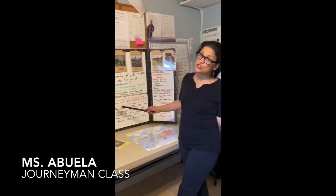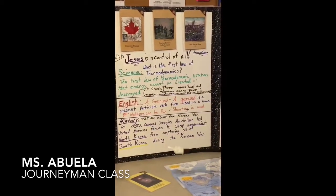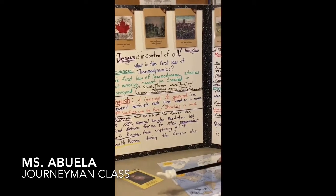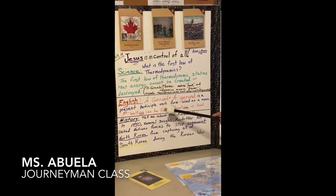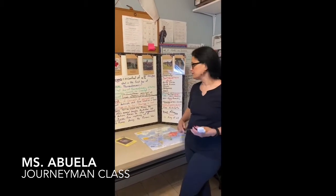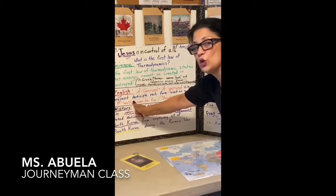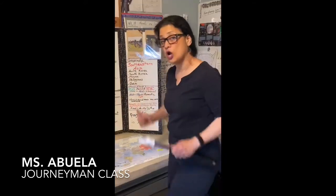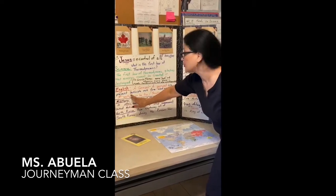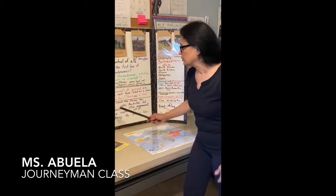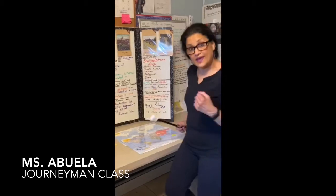Now let's go to English. What's a gerund? A gerund is a present participle verb form used as a noun. I gave you two examples. We have 'walk' — walk is an action, walk is a verb. But now we connect the present participle ending '-ing' to the verb form. The way it's being used here, it becomes a noun. So 'walking can be fun' — walking is used as a noun.